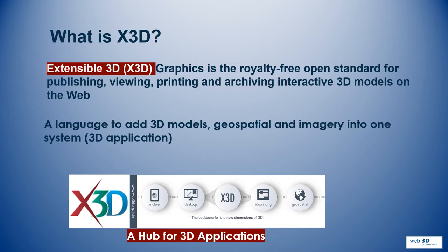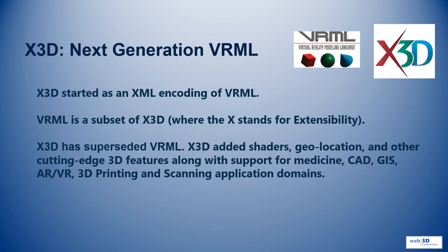So what is X3D? X3D is Extensible 3D. It's a standard for publishing, viewing, printing, and archiving interactive 3D models. It's a language to add 3D models, geospatial imagery, and other 3D assets into one system, into one application. X3D is next-generation VRML. X3D started as an XML encoding of VRML, and VRML is a subset of X3D. X3D has now superseded VRML, and we have added shaders, geolocations, and other cutting-edge 3D features. We also support several application domains from medicine to 3D printing through GIS.